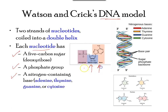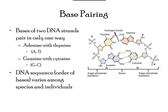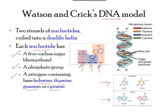There are four types of nitrogenous bases in DNA. Adenine and guanine are double-ringed purines, and cytosine and thymine are single-ringed pyrimidines. The nucleotides are also named for the nitrogenous base they contain — hence adenine, thymine, guanine, and cytosine nucleotides.